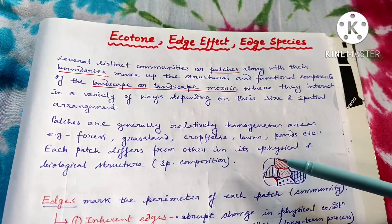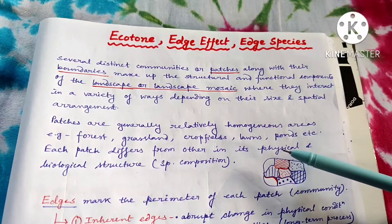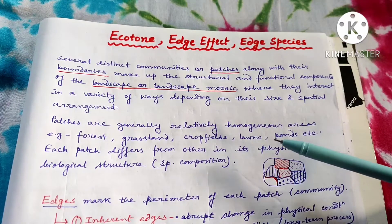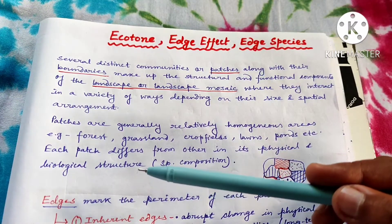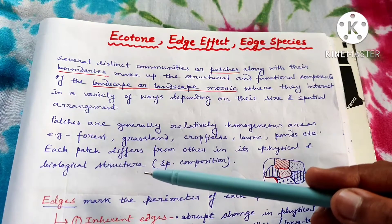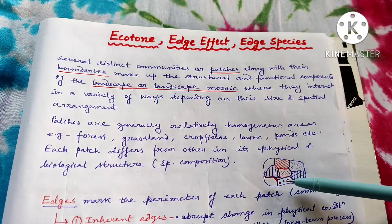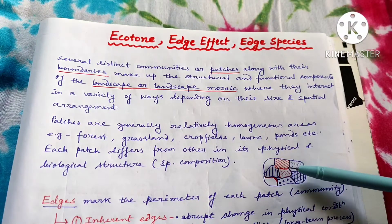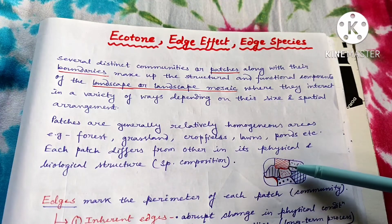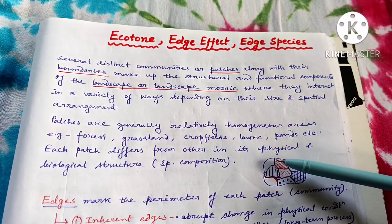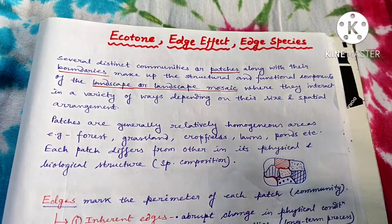Physical structure means their topography, soil component, microhabitat, etc. Biological structure means their species composition or species component. Each patch is different from others according to their biological and physical structure, and each patch is generally homogeneous — relatively homogeneous compared to other patches.